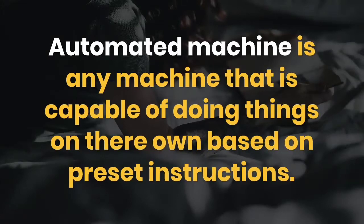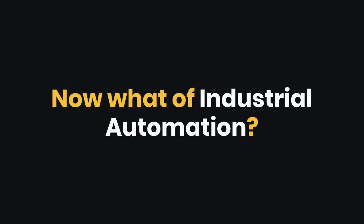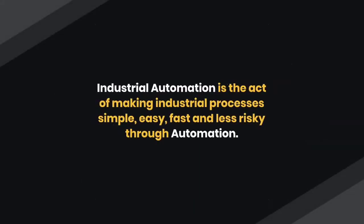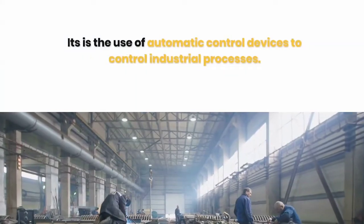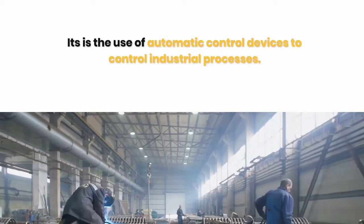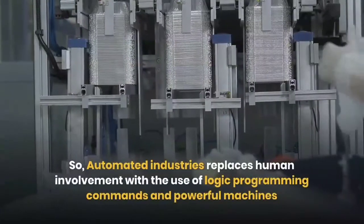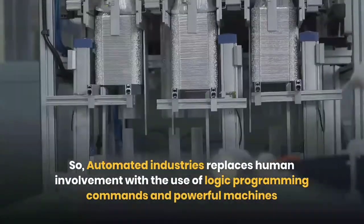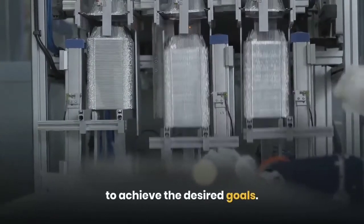An automated machine is any machine that is capable of doing things on its own based on preset instructions. Industrial automation is the application of automation to the industry — the act of making industrial processes simple, easy, fast, and less risky. Automated industries replace human involvement with the use of logic programming commands and powerful machines to achieve the desired goals.